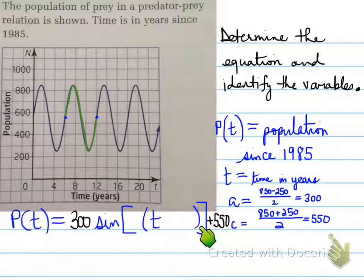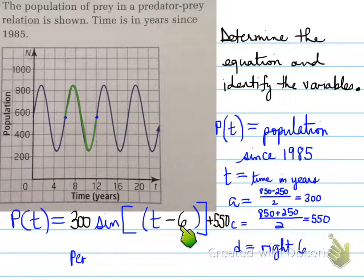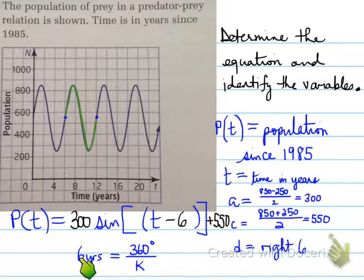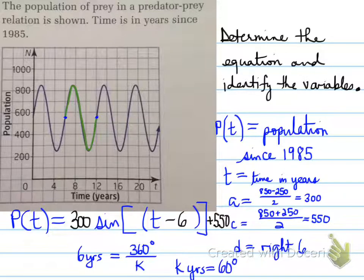Now we need to calculate our K and our D. Our D will begin where our sine curve starts, so our D value here is 6. So we have t minus 6. Then we're going to calculate the period. The period here in years goes from 6 to 12, so the period is 6 years. So 360 degrees divided by K equals 6 years. We need to find how many degrees K is to give us 6, and that answer is 60 degrees. This is the equation that represents this population of the prey.